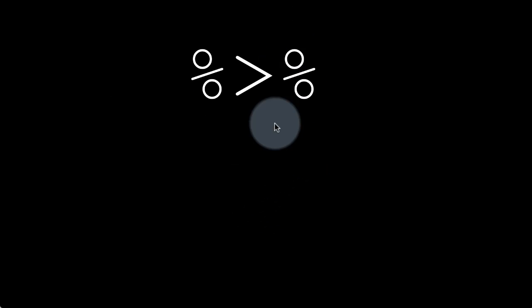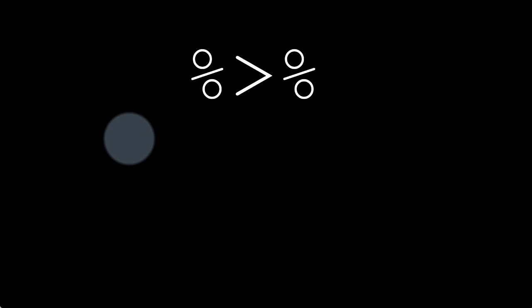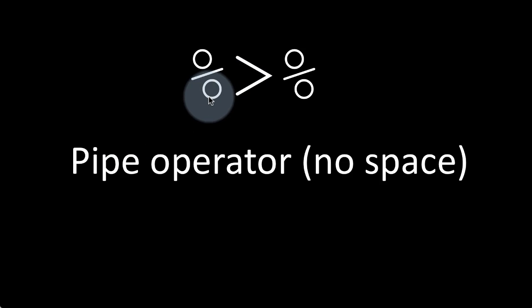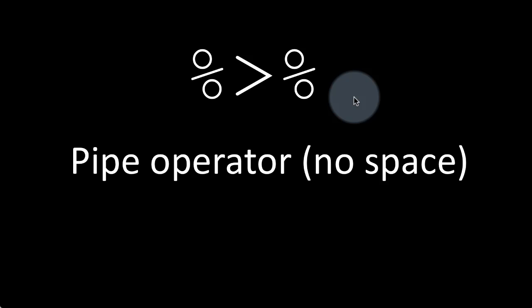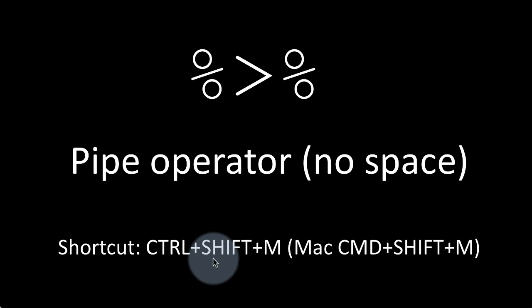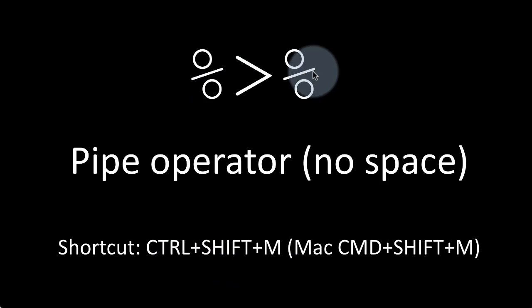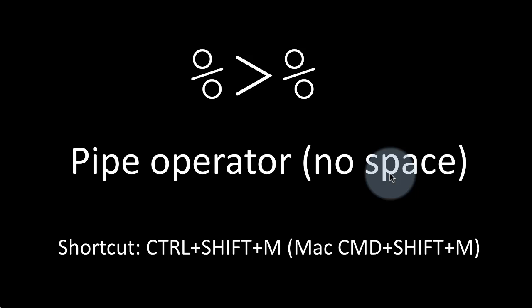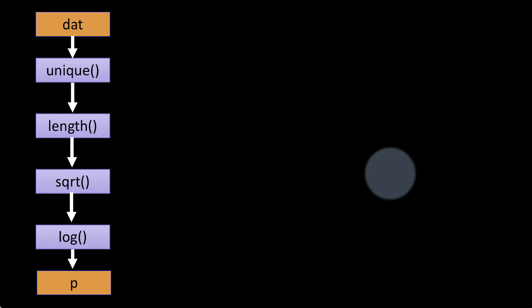We now introduce the pipe operator that makes this kind of code really explicit. The pipe operator is %>% (percent-greater-than-percent). You can type the three characters manually, but a convenient way in RStudio is to press Ctrl+Shift+M on Windows or Cmd+Shift+M on Mac, and RStudio will insert the pipe operator for you — with a space before and after — so you can just continue typing.